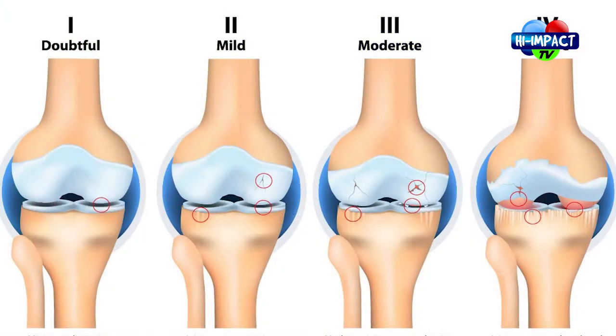We have a destructive mechanism and a repair mechanism in the body — just like our skin, where we shed layers and there's always a renewal. The same thing applies to the articular surface of the joint. Whenever there's a destructive mechanism going on, there should be a reparative mechanism to replace it. But whenever there's a deviation in that check and balance, that's what results in arthritis.